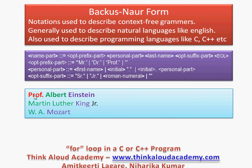For Professor Albert Einstein, we have an optional prefix part, a personal part, and a last name, but no optional suffix. For Martin Luther King Jr., there is no prefix, a personal part of Martin Luther, a last name of King, and an optional suffix of junior. For W.A. Mozart, there is no prefix and no suffix — the personal part has initials with dots, and Mozart is the last name. This is how Backus-Naur form represents the name of a person.